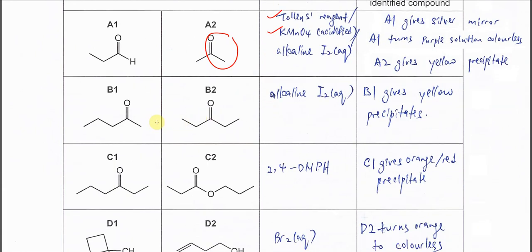To distinguish B1 and B2, we can use alkaline iodine. Because B1 has methyl ketone, so B1 will give yellow precipitate. This is ethyl ketone, will not.